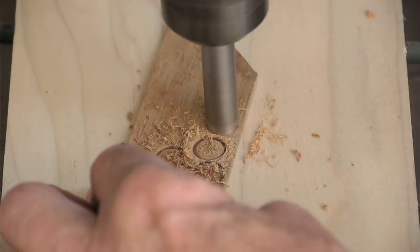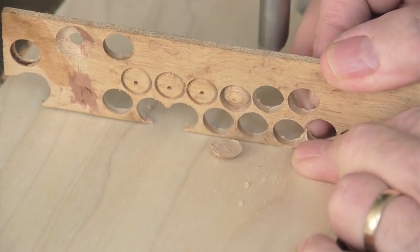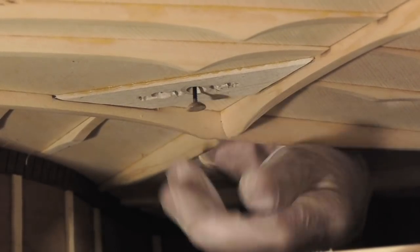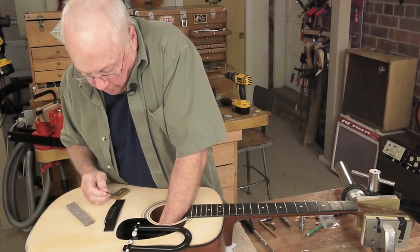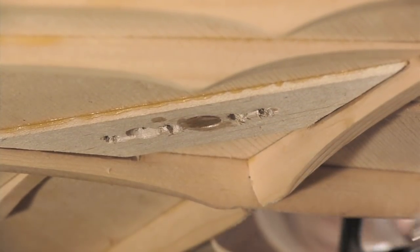The plug cutter makes perfectly domed plugs from wood that matches the bridge plate. A little glue and in it goes. Wiggle my screw free that's holding it, and the suction of the glue is going to hold it in there for a second. I have a clamp right here waiting.